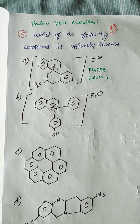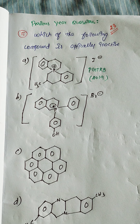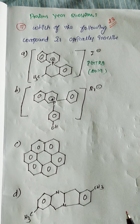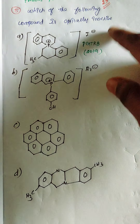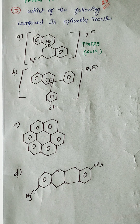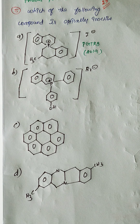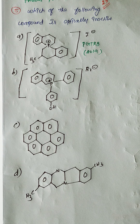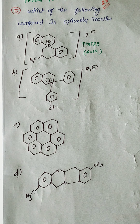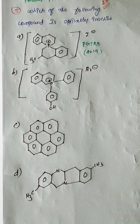The question asks: which of the following compounds is optically inactive? Four compounds are given. For a compound to be optically inactive, it should have no chiral center, no chiral axis, no chiral plane, or it should have a plane of symmetry or other symmetry elements present in the molecule.